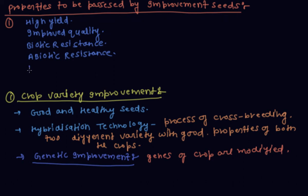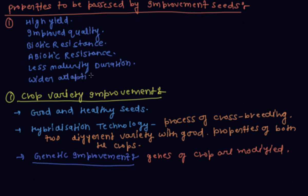The fifth property is less maturity duration. Short-duration crops require less cost and allow more rounds of cropping. The sixth property is wider adaptability — crops which can grow in different conditions.